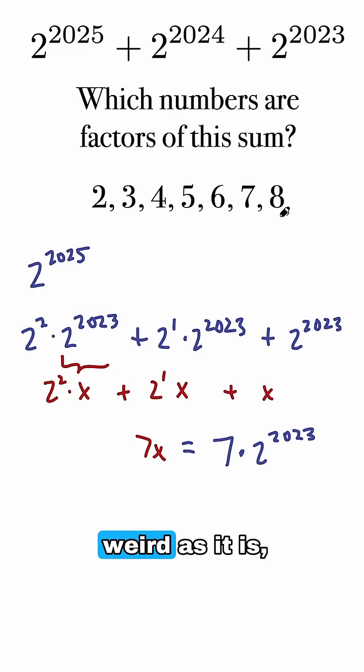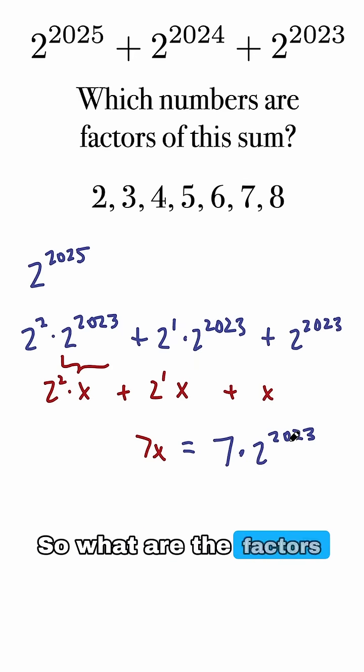Now we're very close to answering this question. This weird expression, weird as it is, is really 7 times this gigantic power of 2. So what are the factors of it?